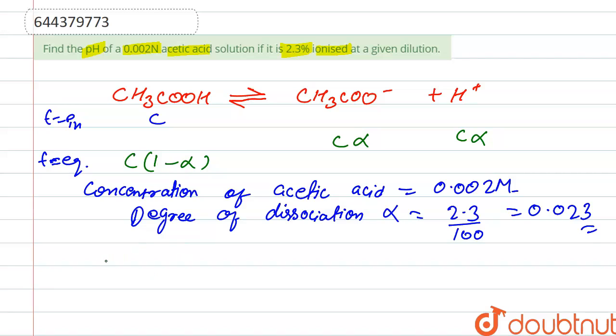So we can say that the concentration of H+ from here is equal to C times alpha. And here alpha is 0.023 and concentration of acetic acid is 0.02, so we put in this value. So we calculate the concentration of H+ - 0.002 into 0.023. After solving, we get 4.6 × 10^-5 M molarity.